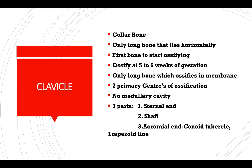The clavicle has three parts: the sternal end, the shaft, and the acromial end. The conoid tubercle and trapezoid line are situated at the acromial end of the clavicle.